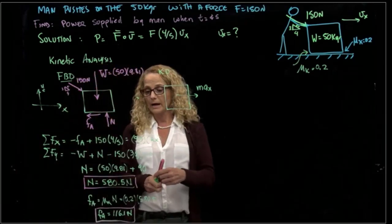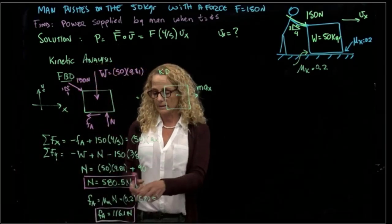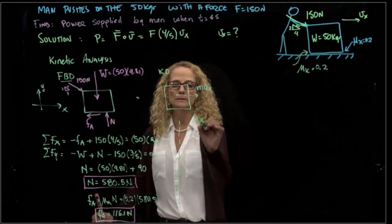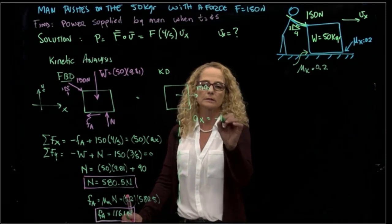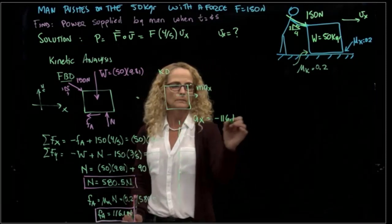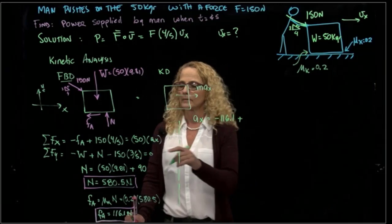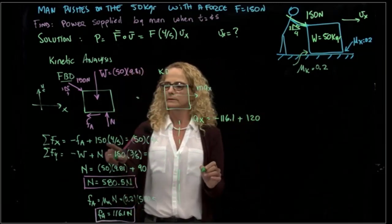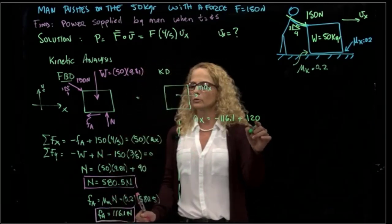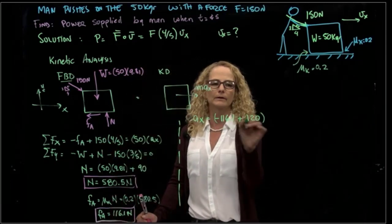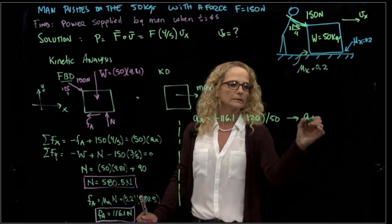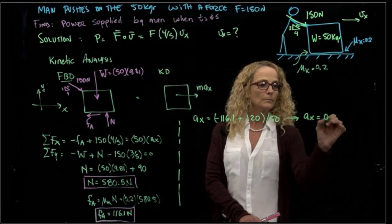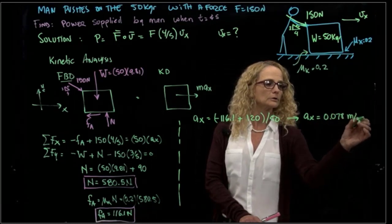Now that we have our kinetic force, we find our acceleration. Our acceleration in x, that friction force, 116.1, plus, this will be 120, right? This is 4/5, 120, everything divided by 50. We have our acceleration is equal to 0.078 meters per second squared.